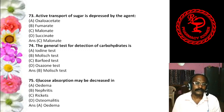Question 72: Amylose contains how many glucose units? Options: 120, 200-300, 300-400, or 500-600. The answer is 300 to 400 glucose units — amylose contains 300 to 400 glucose units.